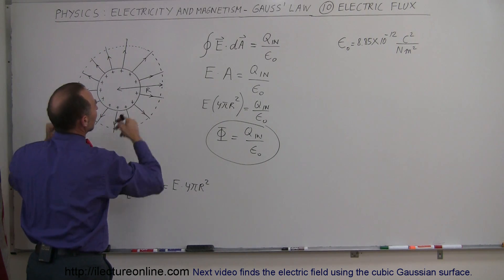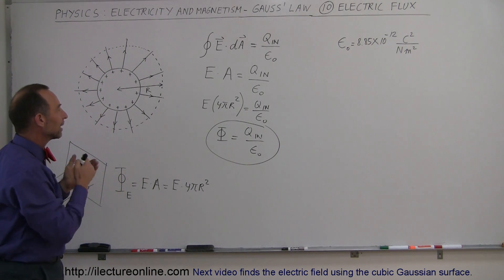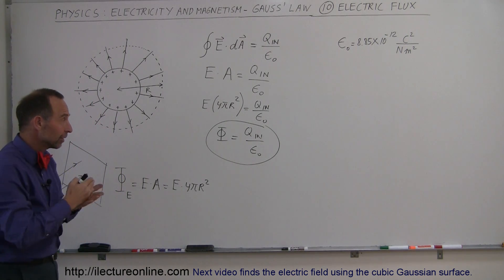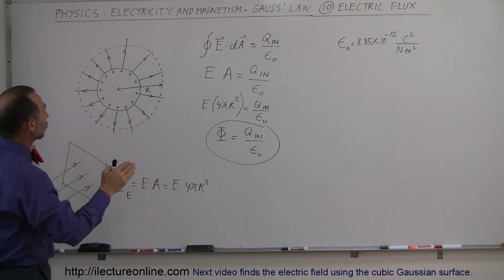Therefore the density of the electric field lines diminishes, the density of the magnitude of the electric field diminishes, but the total number of flux lines does not change.